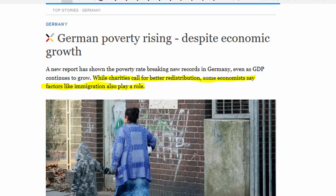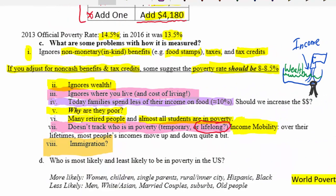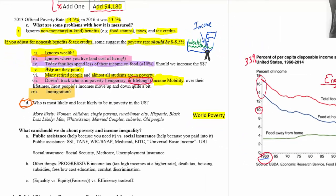We should definitely be concerned with immigrants who come in and are in poverty, and we should help them. But understanding the reason for these changes is important. Now let's look at who is most likely and least likely to be in poverty in the United States.